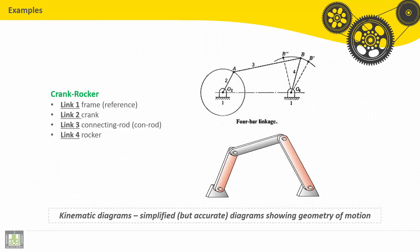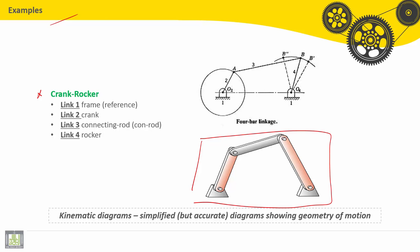We will continue with some examples for kinematic diagrams. Here we have a crank rocker. It is a four-bar linkage, with linkage number one grounded — it is the ground.